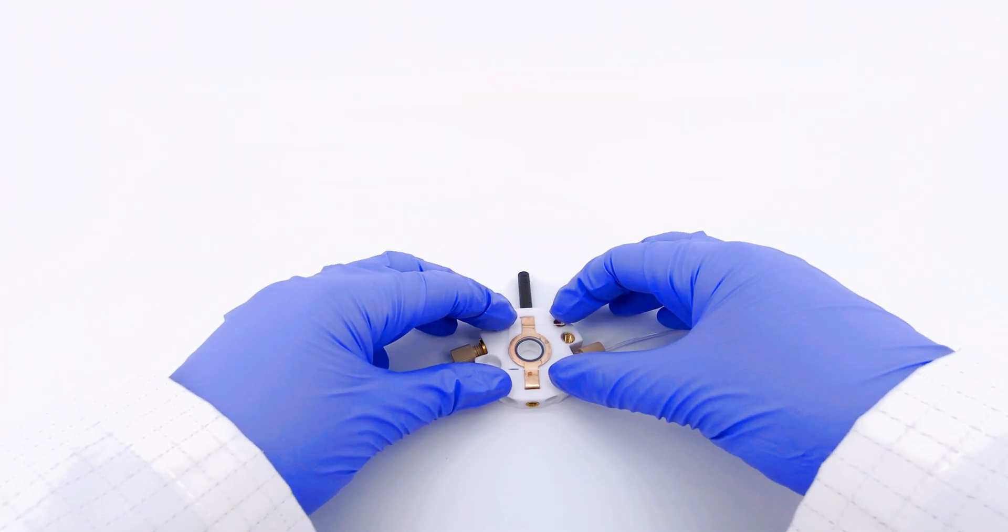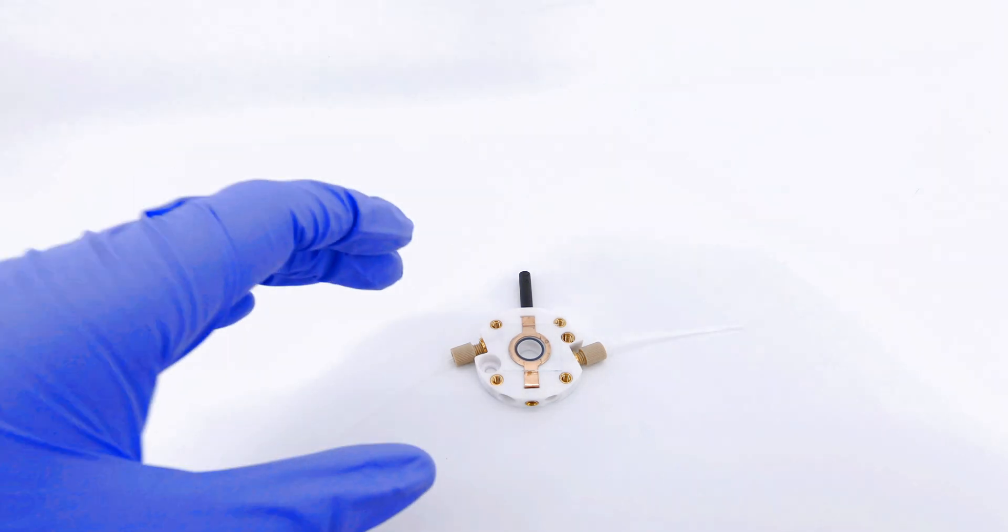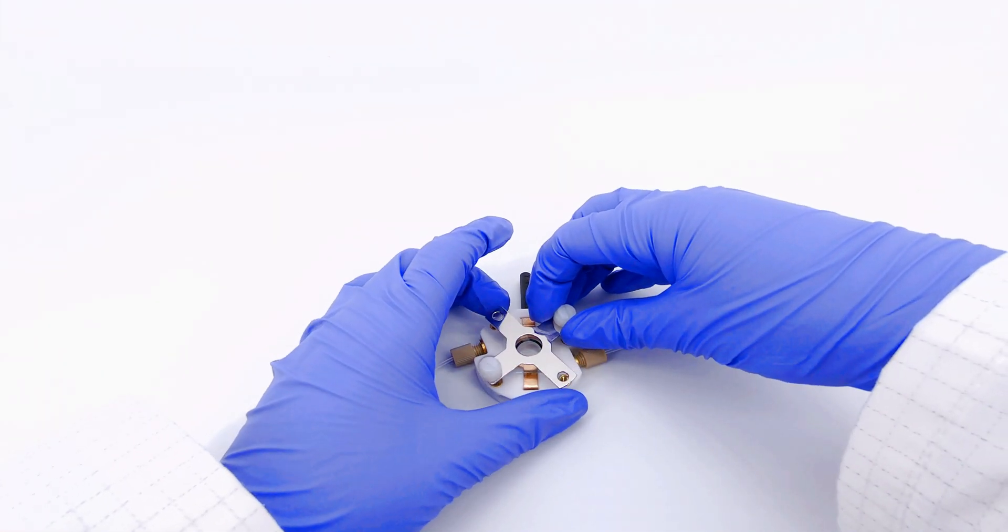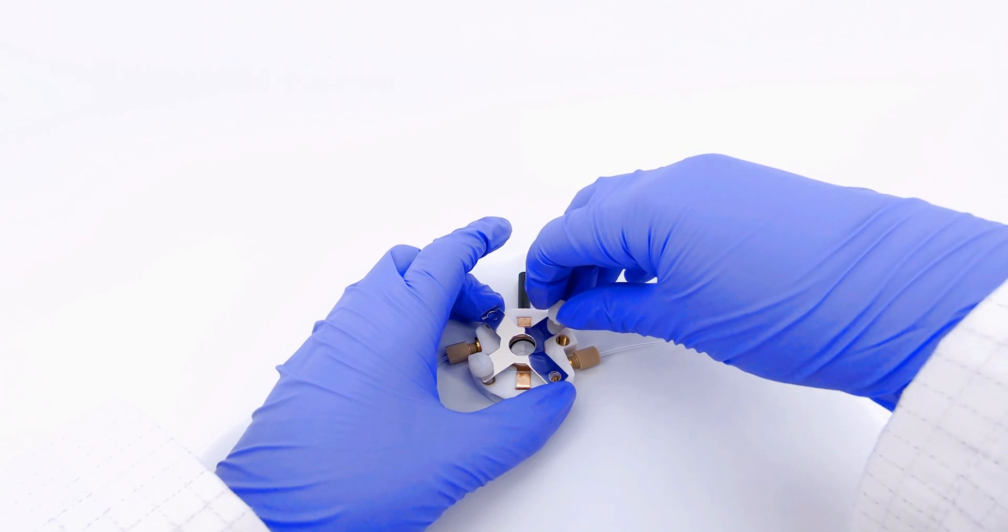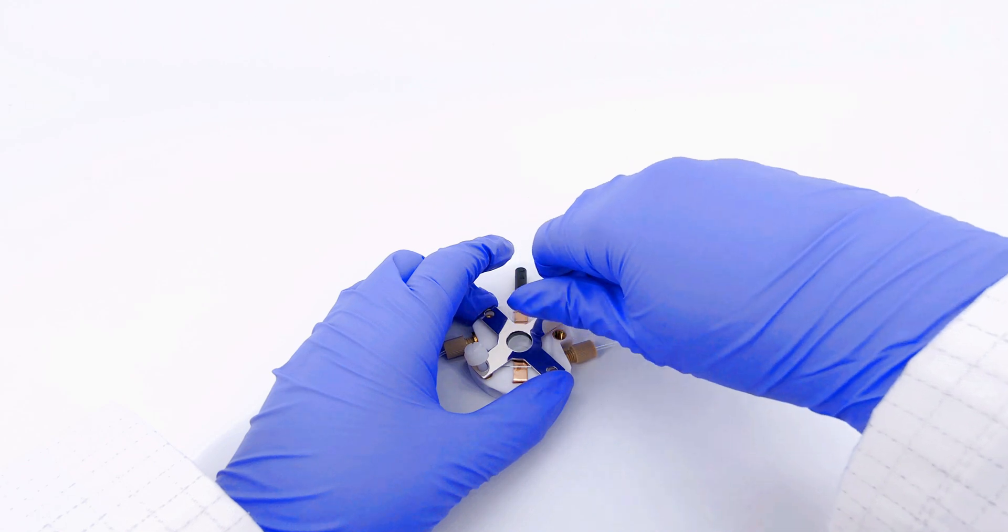Place your photo electrode substrate such that the electrically conductive surface is touching the contact. Next, secure the substrate using the sample holder and associated thumb screws.